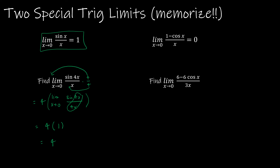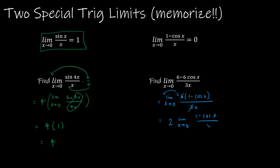Next: the limit as x approaches 0 of 6 times 1 minus cosine x over 3x. Plugging in 0 directly would give 0 in the denominator. Instead, I rewrite it: the 6 over 3 reduces to 2, so this becomes 2 times the limit as x approaches 0 of 1 minus cosine x over x. That limit equals 0, so I have 2 times 0, which is 0.